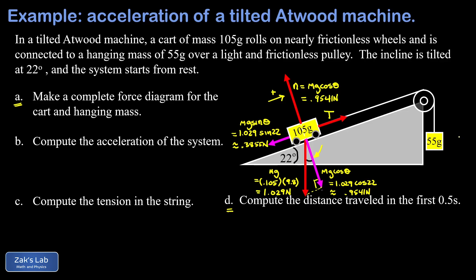So if the 105 gram mass is going up the ramp, the 55 gram mass better be going down. We're going to choose down as the positive direction for that 55 gram mass. Let's get into the force diagram now for the hanging mass. We start with gravity pulling down on it, with a magnitude of m2g. Converting our mass to kilograms, that's 0.055 times 9.8, and when we run the numbers we get about 0.539 newtons.